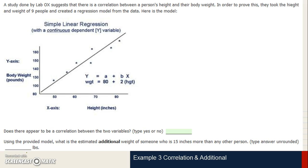To add and build upon what we've been looking at, we've added an additional portion to the question. So let's go ahead and tackle this one. A study done by Lab Ox suggests there is a correlation between a person's height and their body weight. In order to prove this, they took the height and weight of nine people and created a regression model from the data. Here is the model.